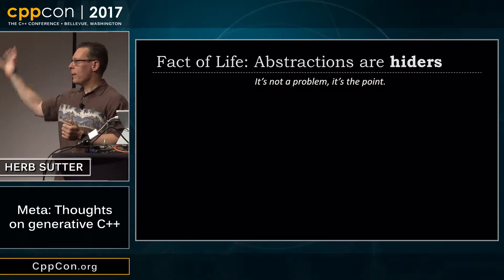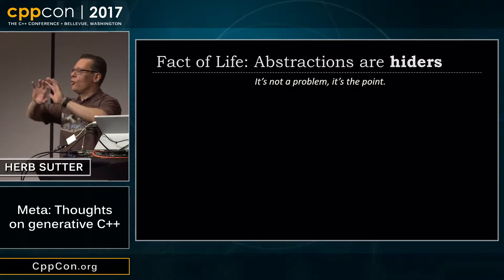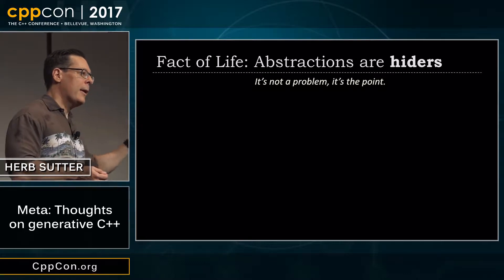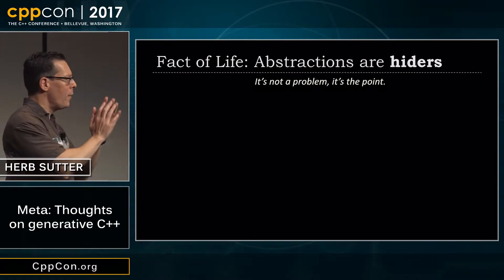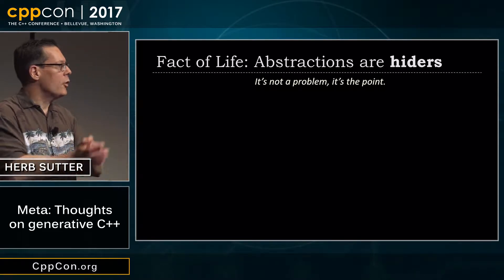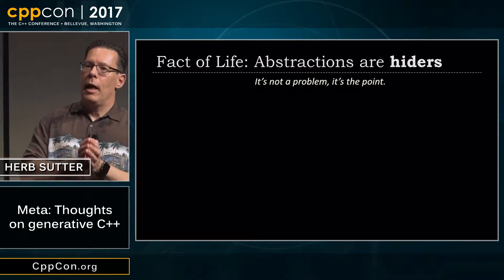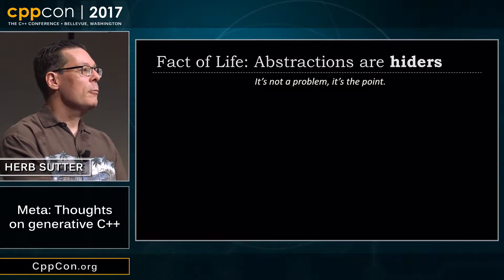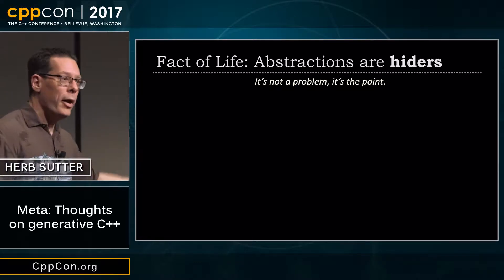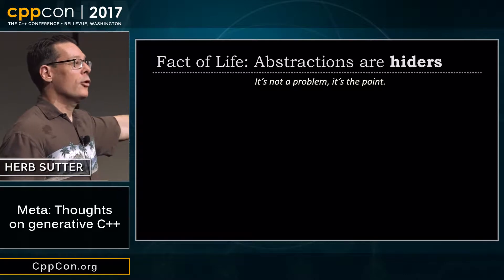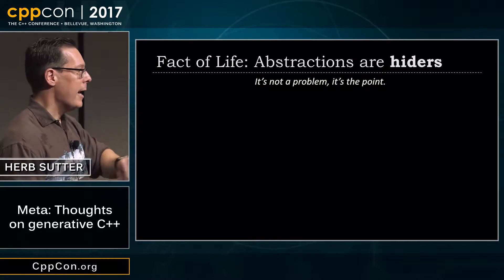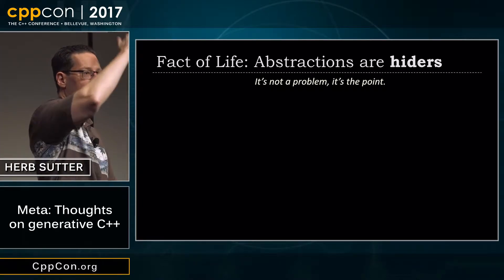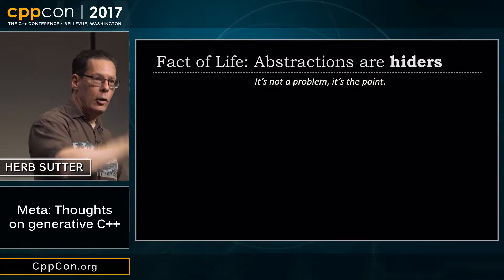Let me take a moment before we switch to metaclasses to talk about this general principle — I added these slides last night because this has already come up multiple times at this conference, including at the panel on Monday night and in hallway discussions. Let me address one thing that's important to remember when we talk about language abstractions and especially tooling. By definition, abstractions are hiders. They hide stuff — it's what they're for. If they didn't do that, they would be useless. They would not have the value that they have. So it's not a problem — it's the point. Abstractions are good. We cannot build our civilization without abstraction. C++ shines because it makes those abstraction layers thinner and more efficient, which is why C++ will always have a future.